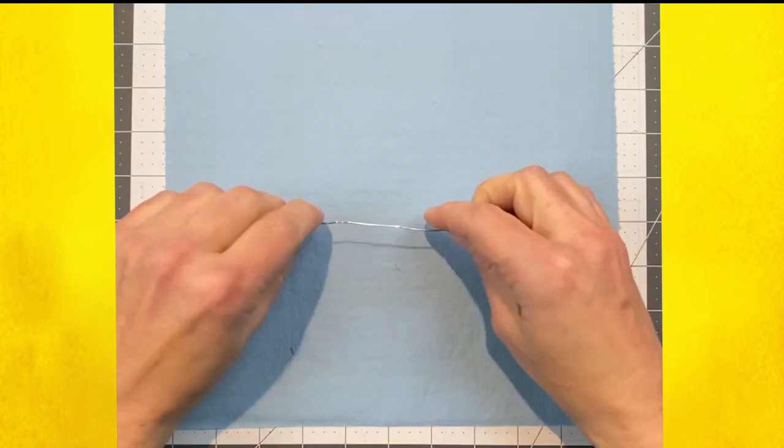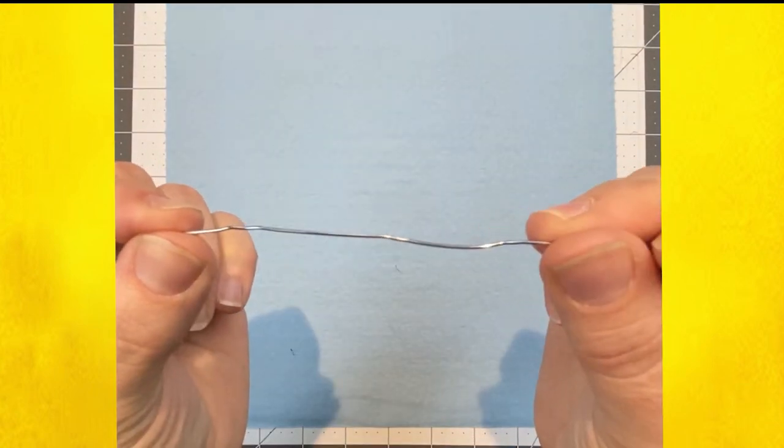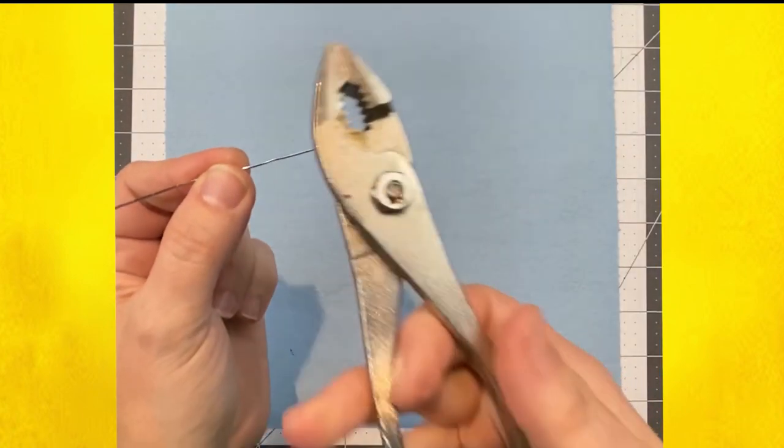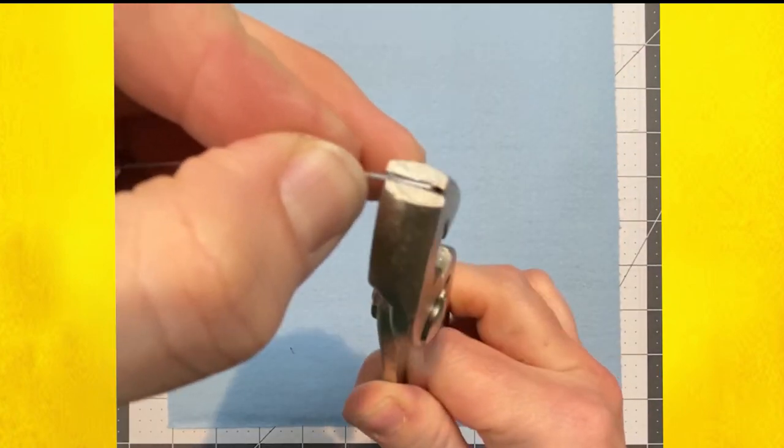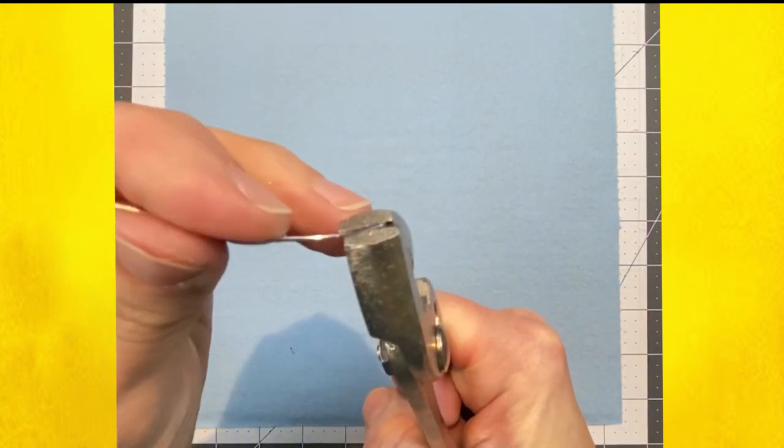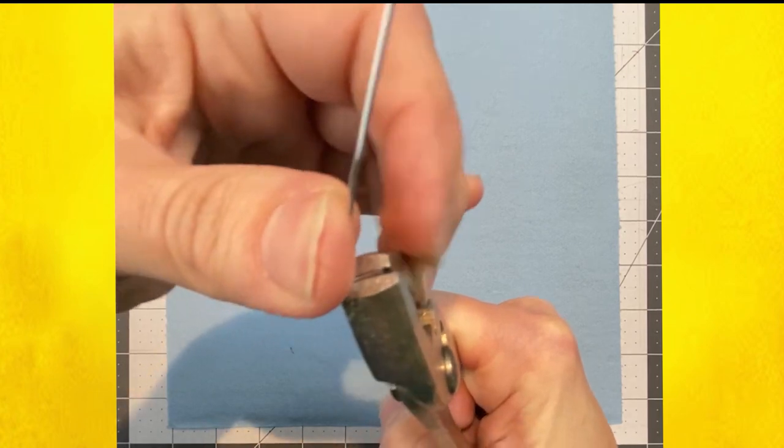I like to use these pliers. I settle the end of the paper clip into the first groove, clamp down tight, and then bend around to the front, making a nice tight loop. Do that to both sides.